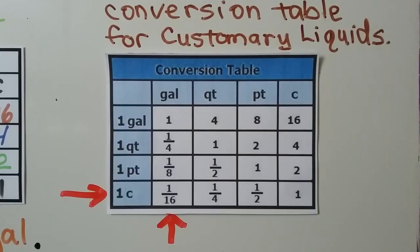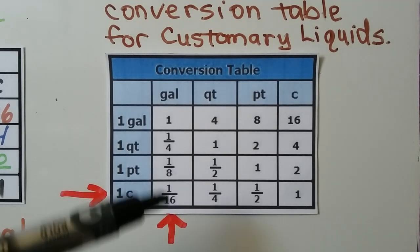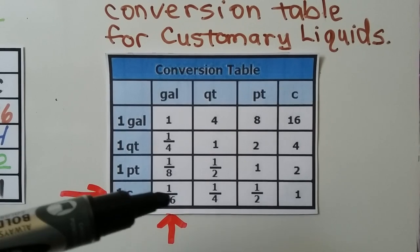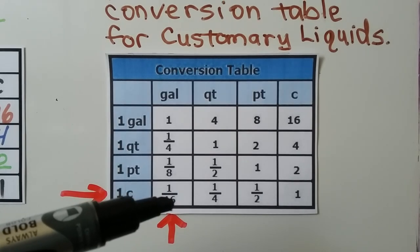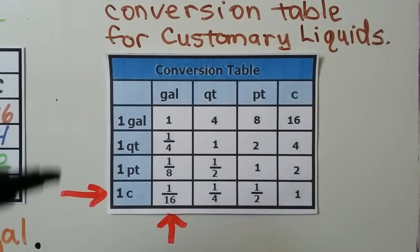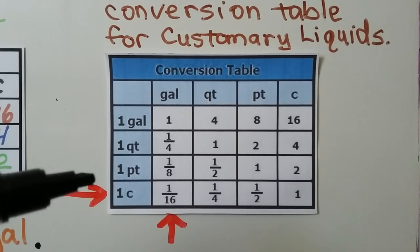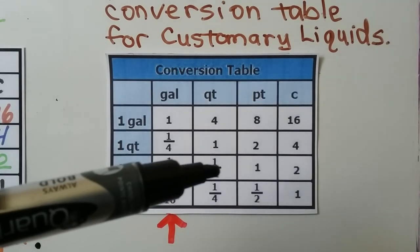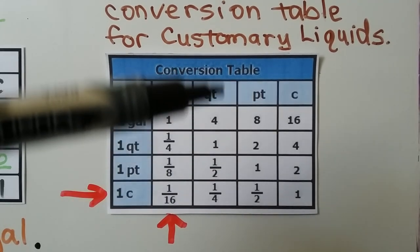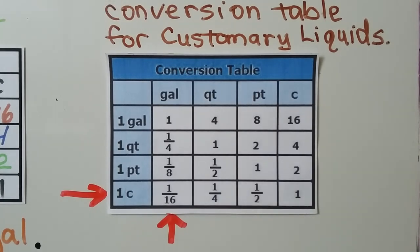Be very careful when reading these conversion tables. Start on the left, and then look up. One cup is one-sixteenth of a gallon. One quart is one-fourth of a gallon. One pint is one-half of a quart.